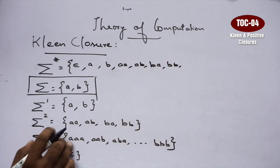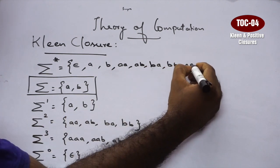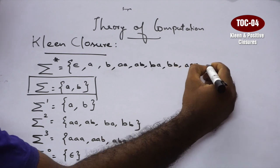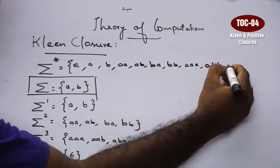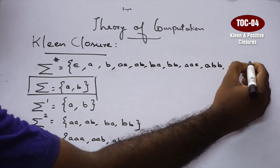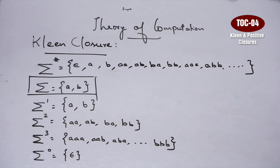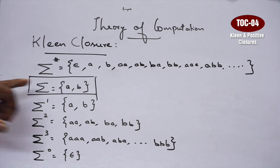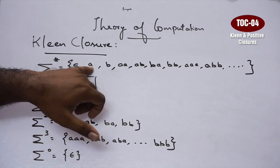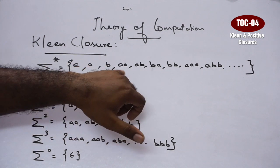Next, string of length 3: AAA, AAB, ABB, and so on. Kleene closure is the set of all possible string combinations derived from the given alphabet. It starts with string of length 0, then string of length 1, string of length 2, and continues.